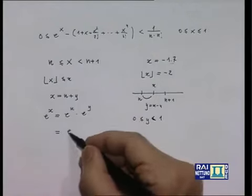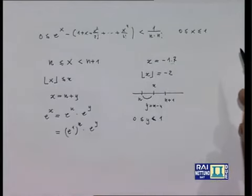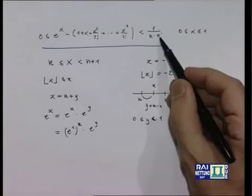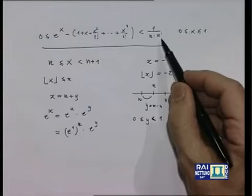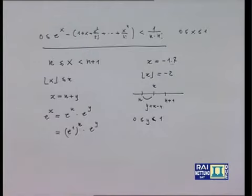e^n sarebbe e elevato a 1 moltiplicato per se stesso n volte, e e^y con y ∈ [0,1]. Quindi se conosco buone approssimazioni di e sull'intervallo [0,1] — e sappiamo farlo — il problema di approssimare e^x per qualsiasi x reale è risolto. Si diceva che n! cresce molto in fretta: 10! è circa 3,6 milioni, quindi per n=10 l'errore è dell'ordine di 1/36.000.000, sommando appena 11 termini.